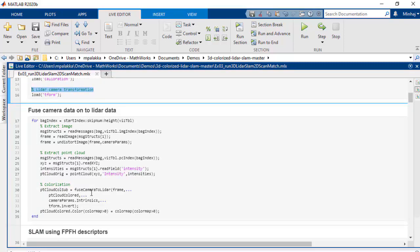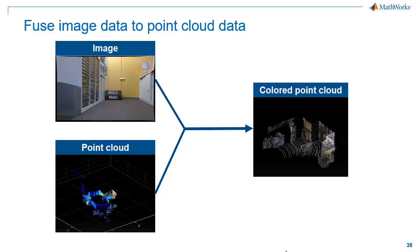Now that we have done LiDAR camera calibration, we'll project camera data onto LiDAR data. To do this, we can use the FuseCameraToLidar function. This function uses the intrinsic parameters of the camera and the camera-to-LiDAR rigid transformation to fuse image information with point clouds. We load the transformation and then apply this function. Here is an example of a colored point cloud obtained by fusing image data with the corresponding point cloud data.